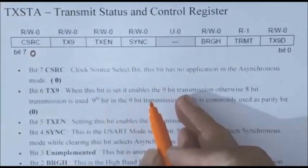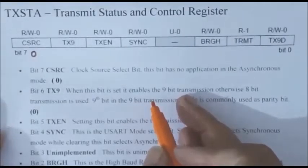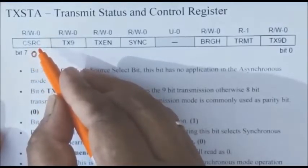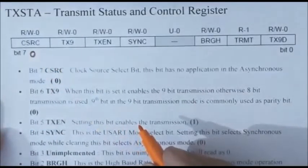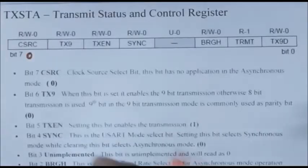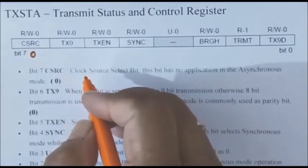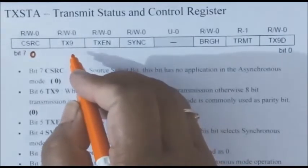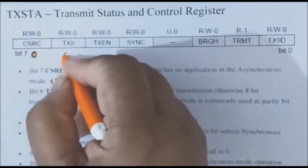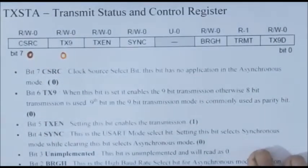This is the 8-bit format of the TXSTA register — the Transmit Status and Control register. The D7 bit is CSRC, used to select a clock source in synchronous mode. Since we are going to use asynchronous mode, this bit will be 0. The D6 bit is TX9. When this bit is set to 1, 9 bits of data are transmitted. Since we are going to transmit 8 bits of data, this bit will be 0. This 9th bit can also be used as a parity bit during transmission.